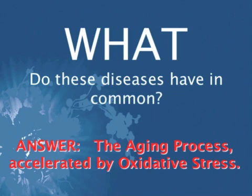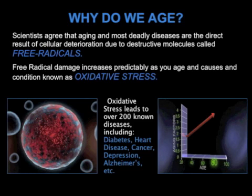These diseases are accelerated by oxidative stress. Oxidative stress is the term used for excessive free radical damage. Scientists agree that aging and most deadly diseases are the direct result of cellular deterioration due to destructive molecules called free radicals. Free radical damage increases predictably as you age, causing a condition known as oxidative stress, which leads directly to over 200 diseases, including diabetes, heart disease, cancer, depression, Alzheimer's, and many others.